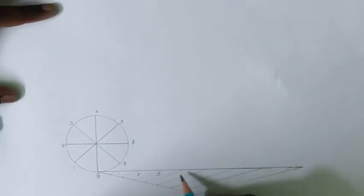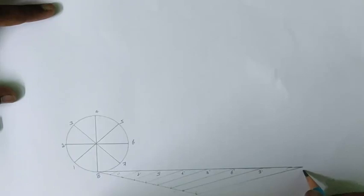Let us name these points. This is 1 dash, 2 dash, 3 dash, 4 dash, 5 dash, 6 dash, 7 dash and 8 dash.